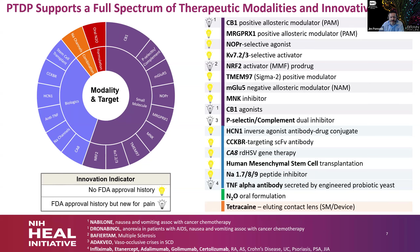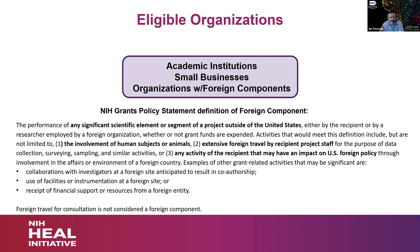Regarding the grant process — which organizations are eligible: PTDP is open to academic institutions, small businesses, and organizations with foreign components. The PTDP PI must be within the US; previously foreign PIs could apply but that changed in the last year. Foreign components include any collaboration with investigators at a foreign site anticipated to result in co-authorship, use of facilities or instrumentation at a foreign site, or receipt of financial support from a foreign entity. Foreign travel for consultation or meetings is not considered a foreign component.